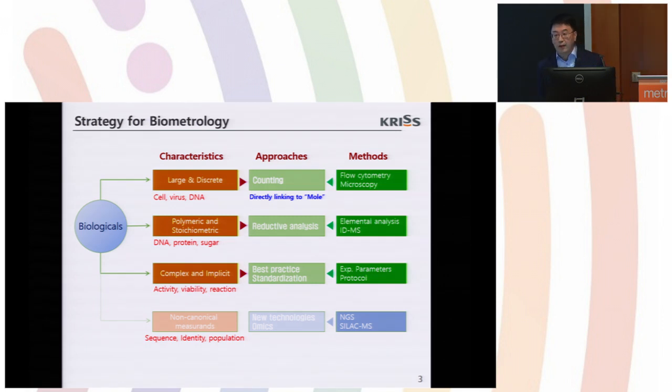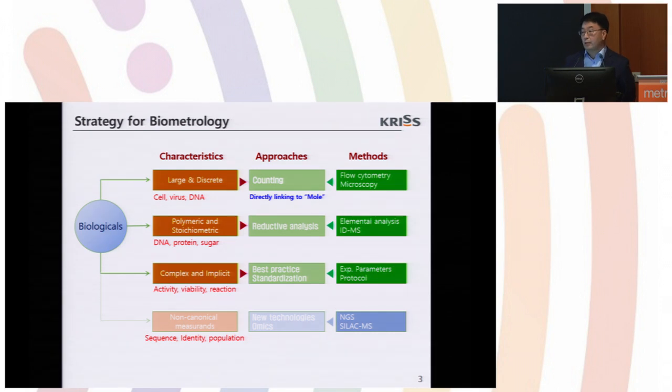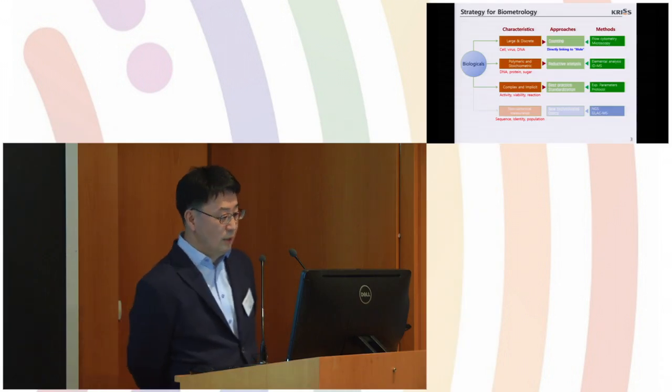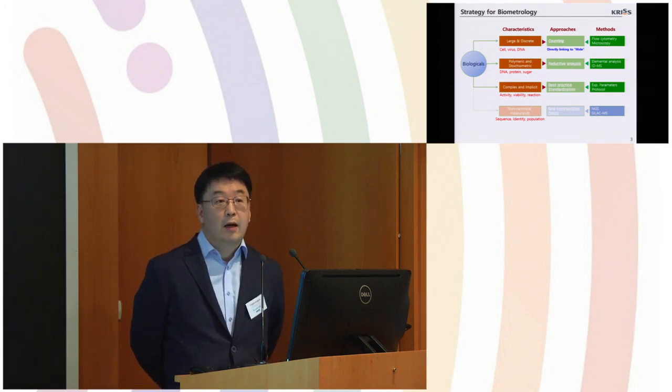Around 2005, we conceptualized our strategy for establishment of biometrology like this. We subdivide biologicals to several sub-categories. First was large and discrete. Cell, virus, and DNA belong to this category, and we thought counting will be very effective for this category. And second was polymeric and stoichiometric. DNA, protein, and sugar belong to this category, and we thought reductive analysis such as elemental analysis and building block analysis will be very effective for this category. And third one was complex and implicit activity, viability, and reaction will be in this category. And we thought best practice and standardization could be our approach.